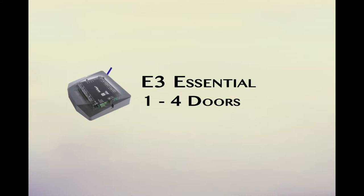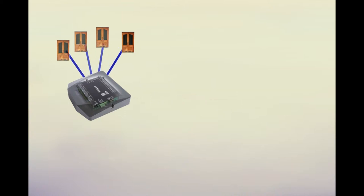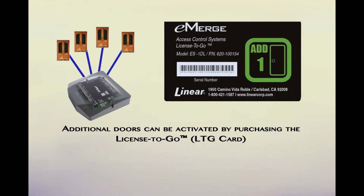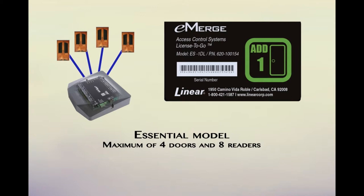The first type of model that can be ordered are controllers. An E3 Essential controller allows you to secure one to four doors. The system is produced by the factory with either one or all four doors activated for use. If a one-door model is initially purchased and later needs expansion, additional doors can be activated on the PCB module by purchasing a one-door add license to go card. The card provides the ability to add one door at a time to an Essential model, up to a maximum capacity of four doors and eight readers.